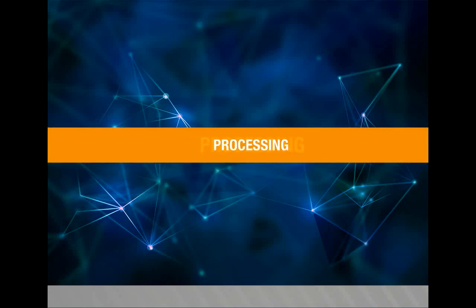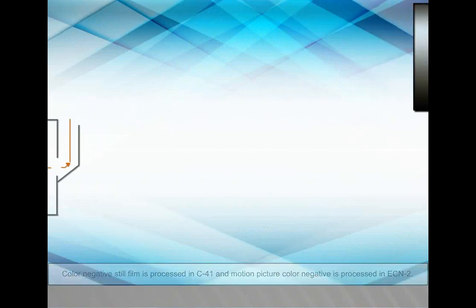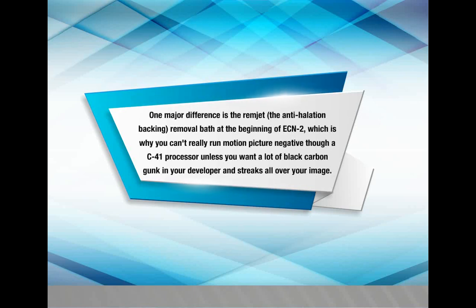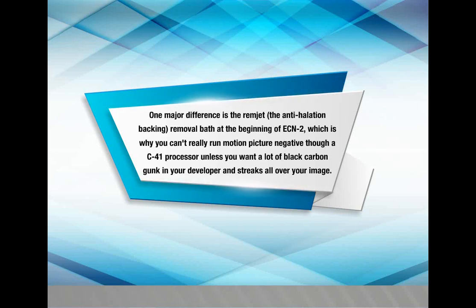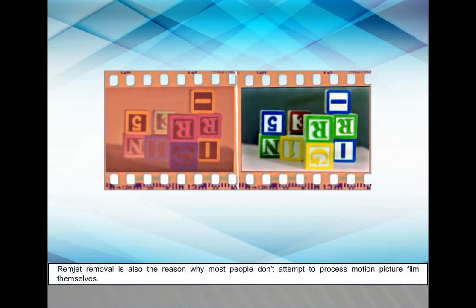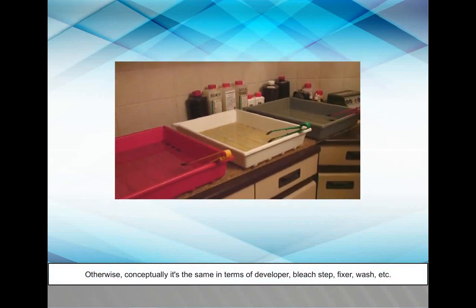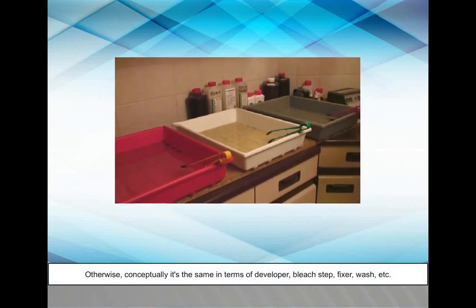Processing. Color negative still film is processed in C41, and motion picture color negative is processed in ECN2. One major difference is the REMJET — the anti-halation backing removal path at the beginning of ECN2 — which is why you can't run motion picture negative through a C41 processor without getting black carbon gunk in your developer and streaks all over your image. REMJET removal is also the reason why most people don't attempt to process motion picture film themselves. Otherwise, conceptually it is the same in terms of developer, lead step, fixer, wash, etc.